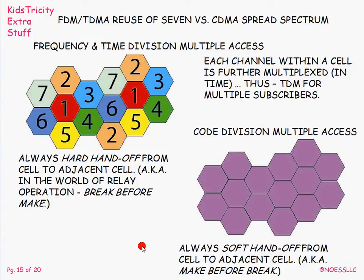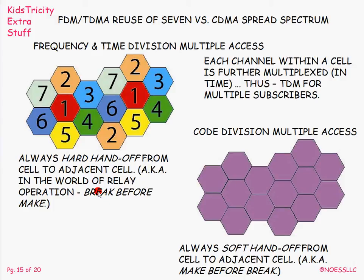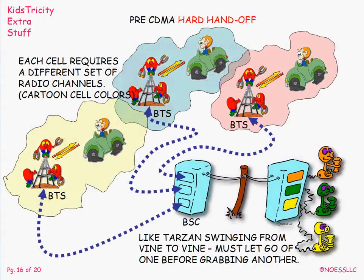CDMA — Code Division Multiple Access — is very different. Everybody is on the same frequency, a very wide band. Instead of having little separate stacks, this is one gigantic thick pancake. So everybody's on the same frequency, and when you move from cell to cell, you're really just transferring to a different digital code encoded within that radio frequency. This allows what's called a soft handoff — no click as you move from one cell to the next. In old hardware terms, the pre-CDMA approach is 'break-before-make'; CDMA is 'make-before-break' — you don't let go of the old connection until you've firmly established the new one.